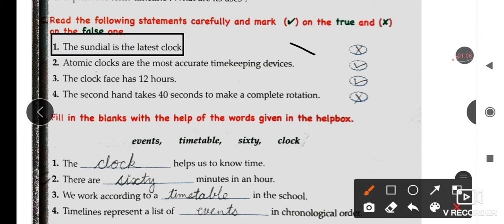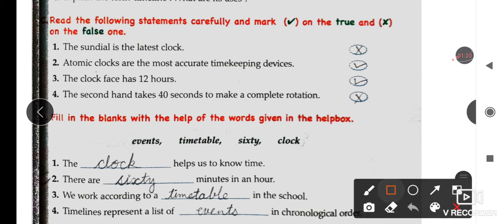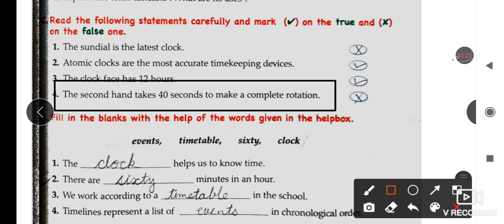Statement 2: Atomic clocks are the most accurate timekeeping devices - this is correct. Statement 3: The clock face has 12 hours - this is correct. Statement 4: The second hand takes 40 seconds to make a complete rotation - this is also wrong.